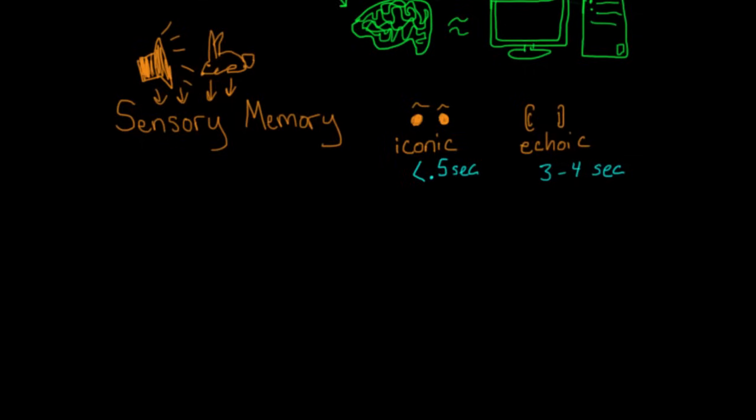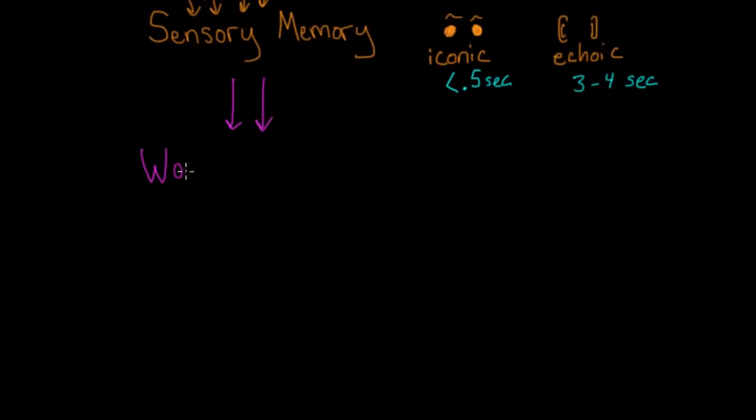So we have a ton of information coming into our sensory memory, but we can't possibly process all of it. We decide what to pay attention to, and that gets passed along into working memory to be processed. Working memory is just whatever you're thinking about right at this moment. It's also called short-term memory, but we're going to stick with working memory, because that's what most psychologists call it.